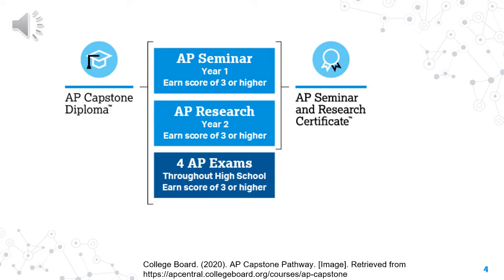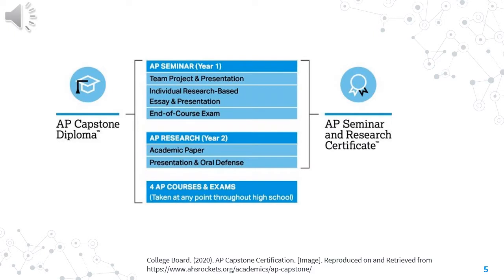If you complete both of those and successfully complete four other AP exams, meaning a three or higher, you can earn the AP Capstone Diploma. You'll notice that in AP Seminar, you have a team project and presentation and an individual research-based essay and presentation, along with an end-of-course exam. AP Research has an academic paper and a presentation and oral defense.